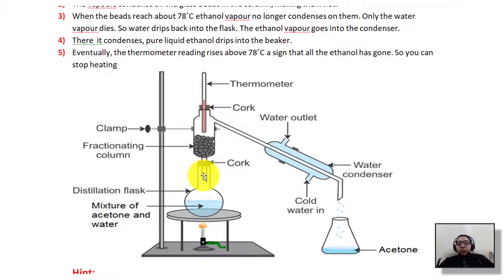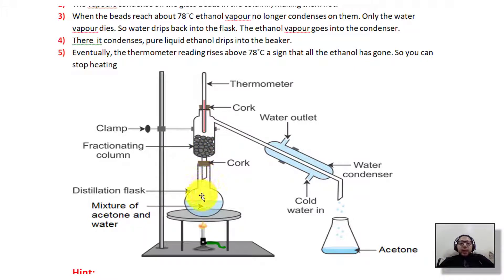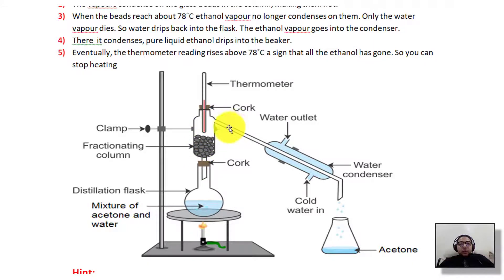The boiling point of water is 100°C. When water vapor is in the column at 78°C, that temperature is below water's boiling point, so the column acts as a cooler surface for water vapor. The fractionating column condenses the water vapor back into liquid, which drips back into the distillation flask. If you then increase the temperature to 100°C to separate the water, the column reaches 100°C and water vapor passes through without condensing, ensuring pure liquid is collected.